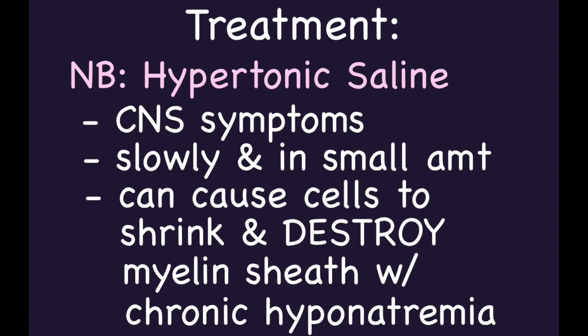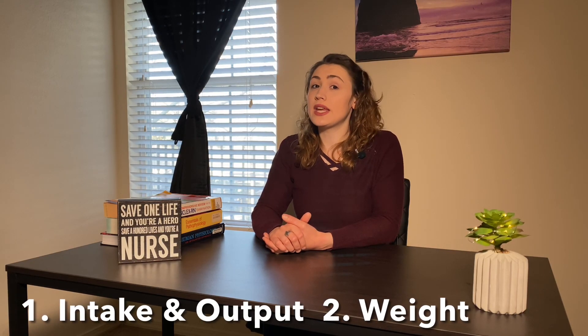You can also give hypertonic saline — 3% sodium chloride — in small amounts if there are severe CNS symptoms. However, caution is needed: if hyponatremia has been present for a few days, the brain cells have adjusted their internal osmolarity. If you then flood the blood with a hypertonic solution, the cells will shrink, and the myelin sheath can be destroyed, causing serious neurologic injury or death — a condition called osmotic demyelination. Because hypertonic saline is harsh on veins, it is typically given through a central line.